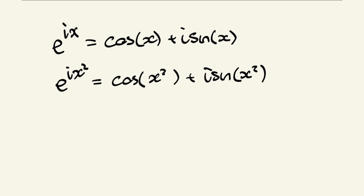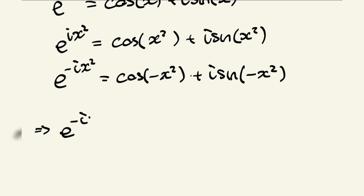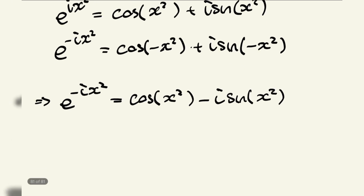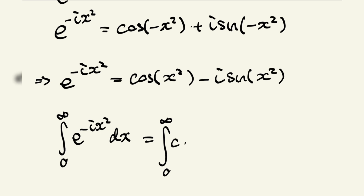For the purposes of today, we're also going to consider negative x squared. So e to the negative i x squared is equal to cosine of negative x squared plus i sine of negative x squared, which simplifies to cosine of x squared minus i sine of x squared. So the integral from zero to infinity of e to the negative i x squared dx equals the integral of cosine of x squared minus i times the integral of sine of x squared — there are our Fresnel integrals.